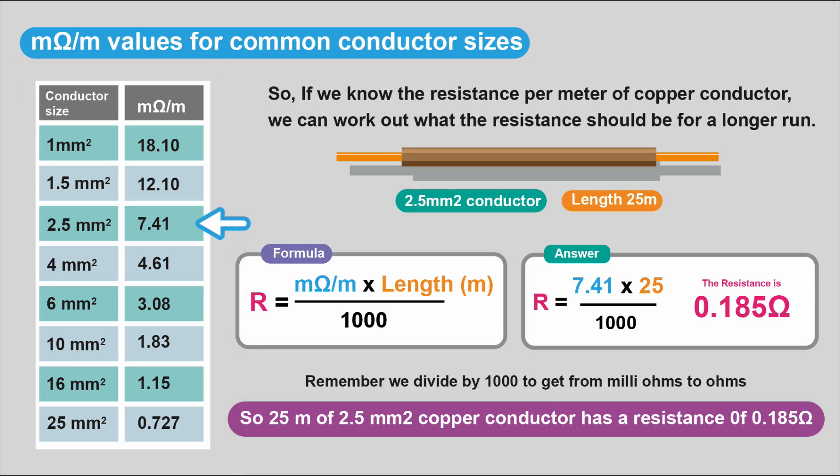So we can work out what the resistance should be for a given length, and it's some simple math. The resistance will be the milli-ohms per meter times the length in meters divided by 1,000. Remember, we divide by 1,000 to get it back into ohms from milli-ohms.